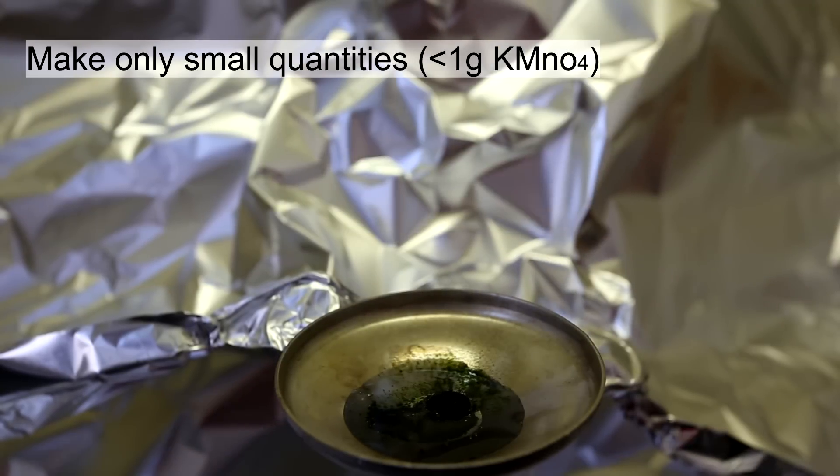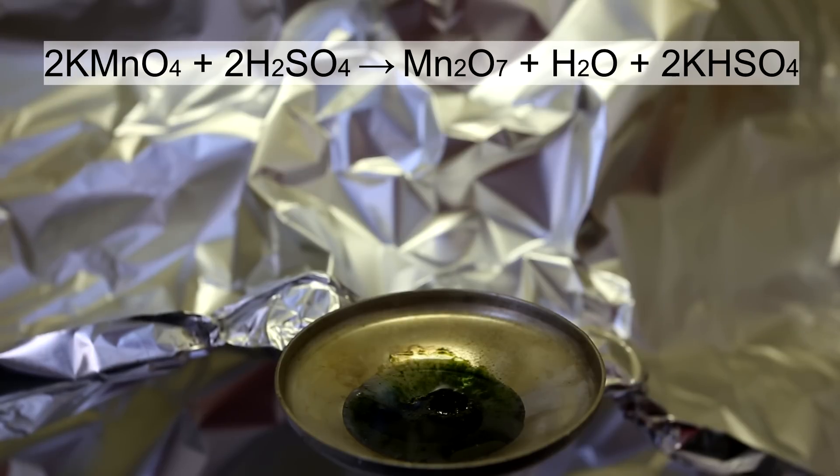Then, lightly stir the mixture to make sure that all of the potassium permanganate reacts. The manganese heptoxide is formed according to the equation above.